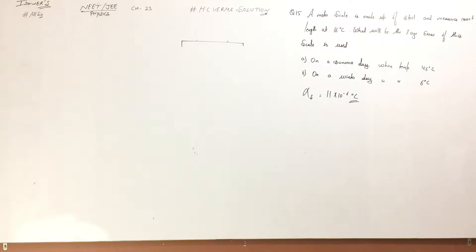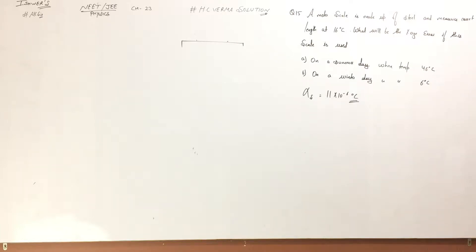A meter scale is made of steel and measures the correct length at 16 degrees Celsius. What will be the percentage error if the scale is used on a summer day when temperature is 46 degrees Celsius, and on a winter day when temperature is 6 degrees Celsius? The coefficient of linear expansion of steel is given as 11 into 10 to the power minus 6 per degree Celsius.